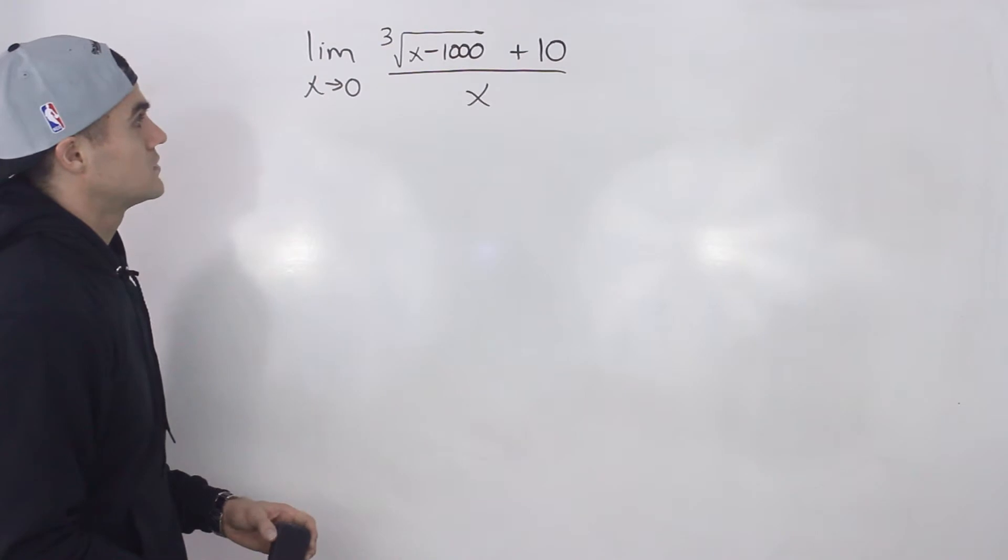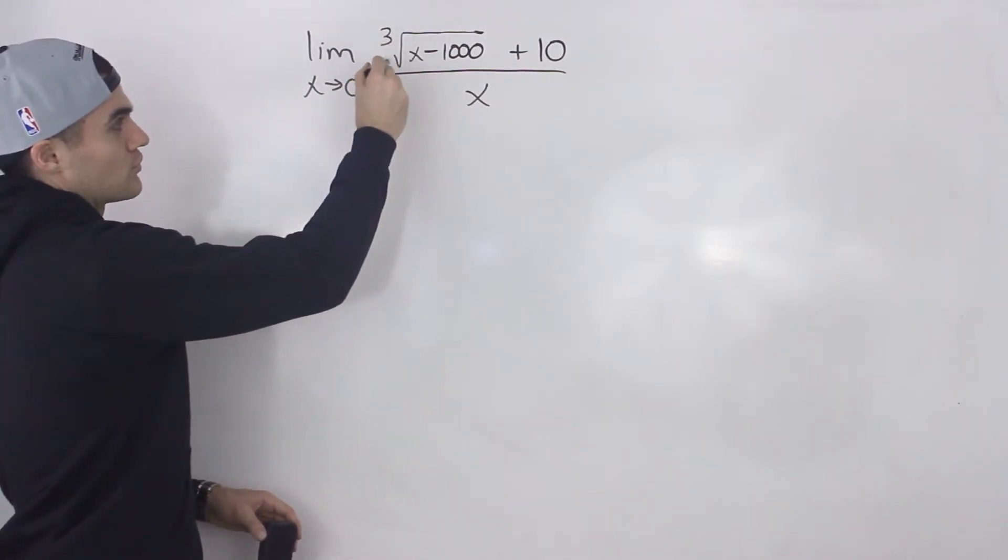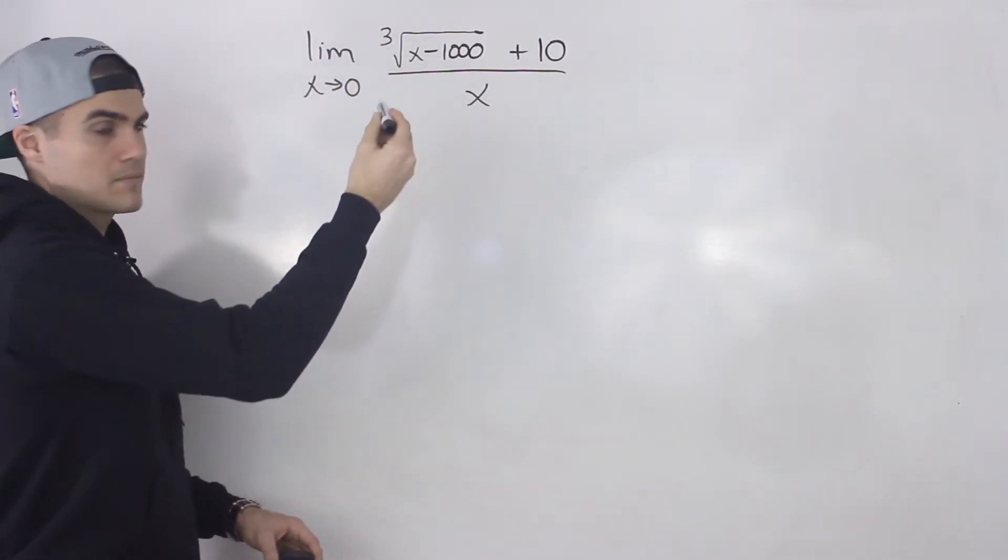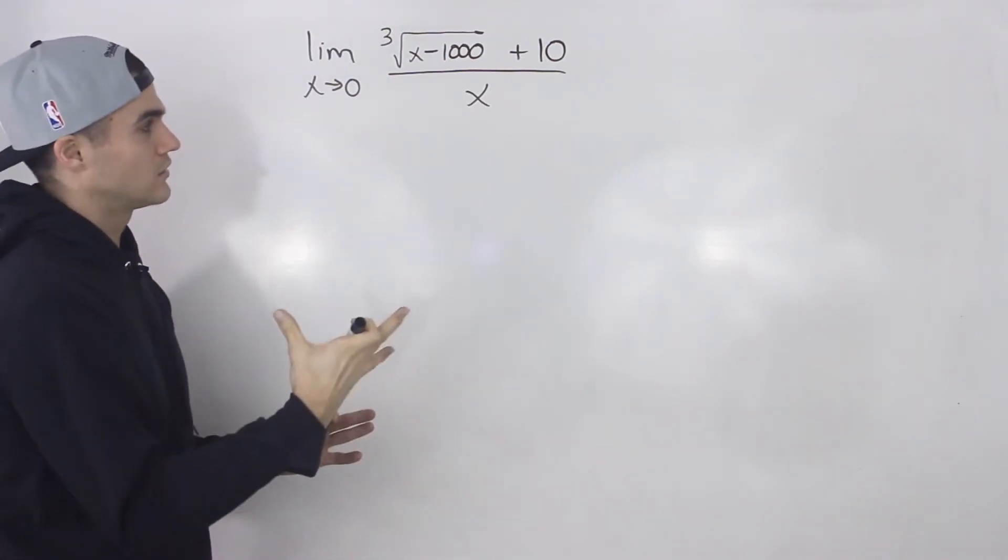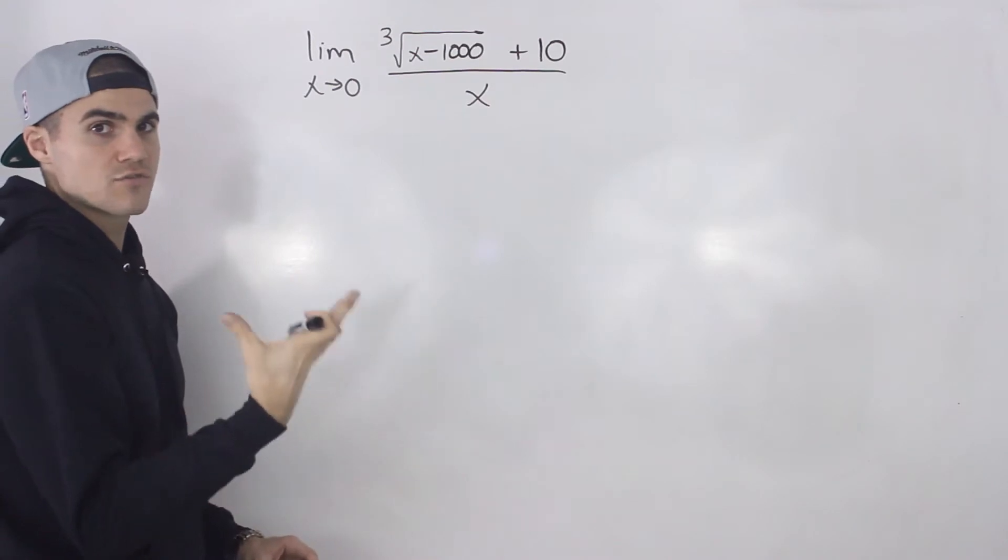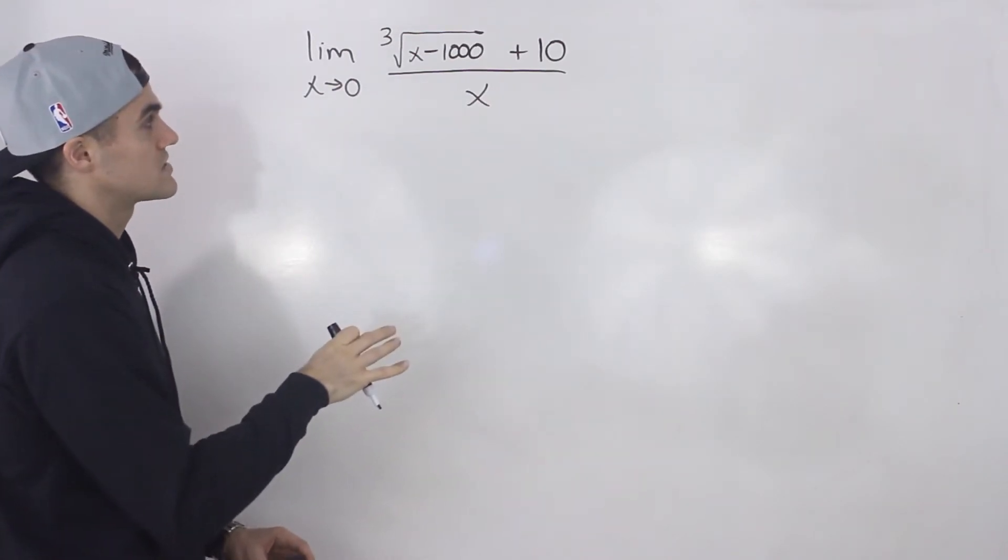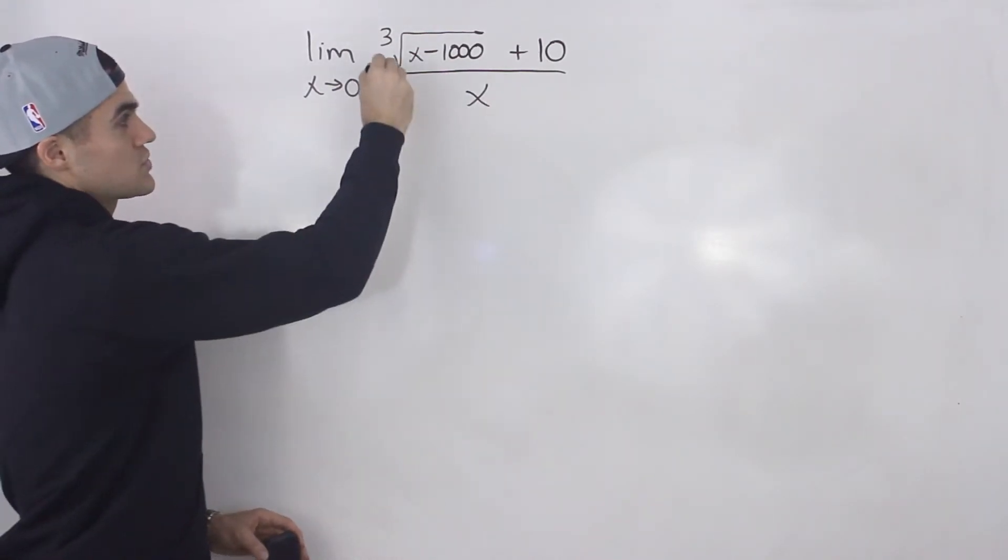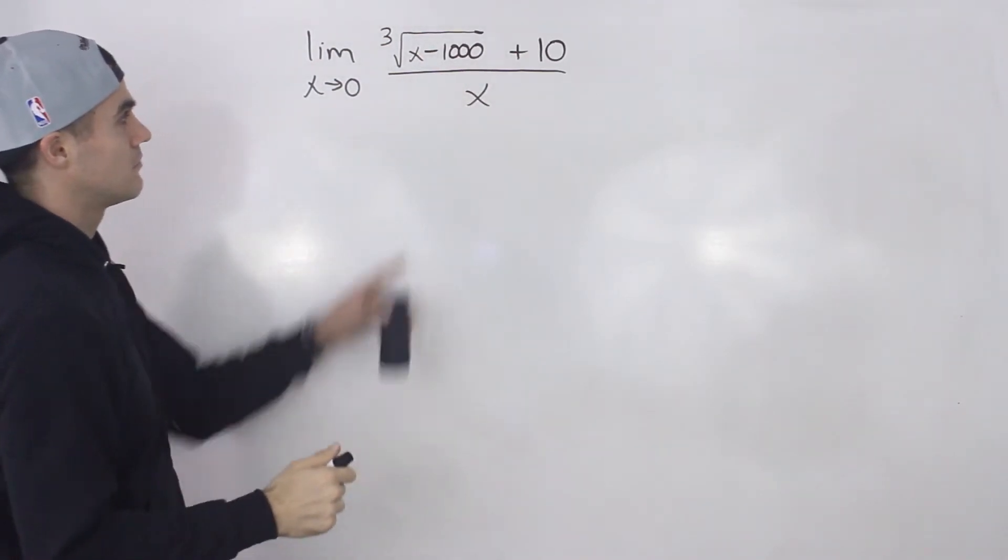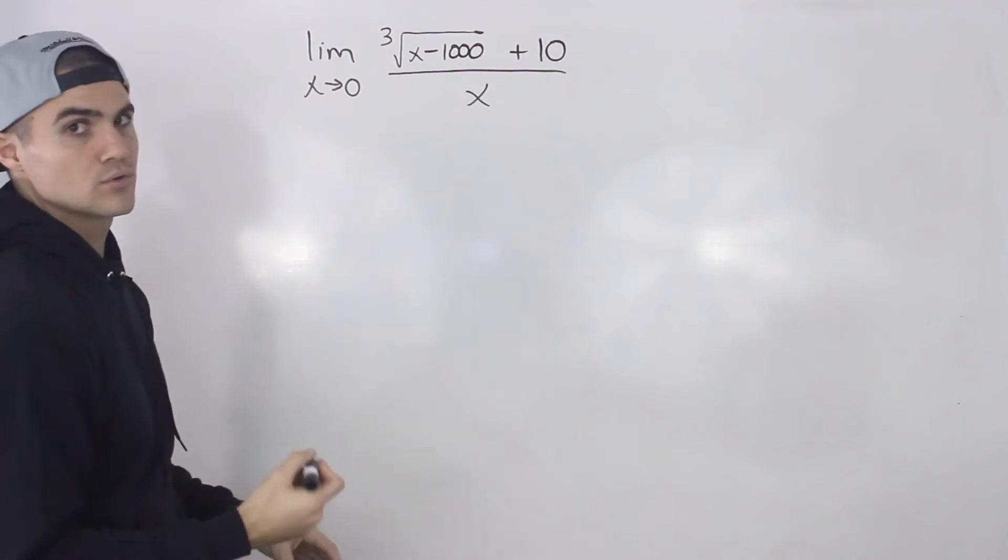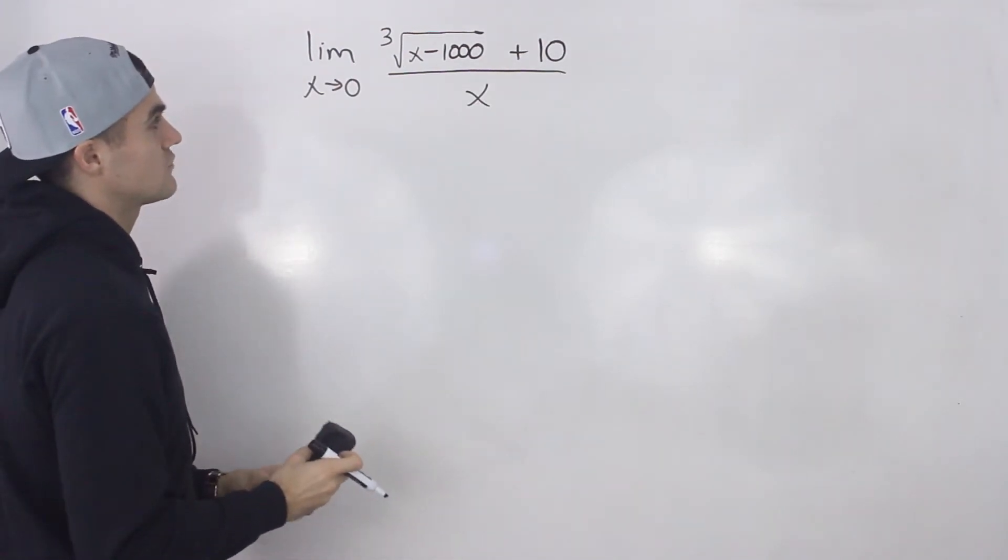So what can we do here? Notice that we're dealing with a third root of something, and whenever we've been dealing with third roots or ugly roots like that, we've been using the change of variable strategy. We're going to have to do the same thing here. If this was just a square root, we could potentially rationalize it, but because we're dealing with a third root, let's do a change of variable.